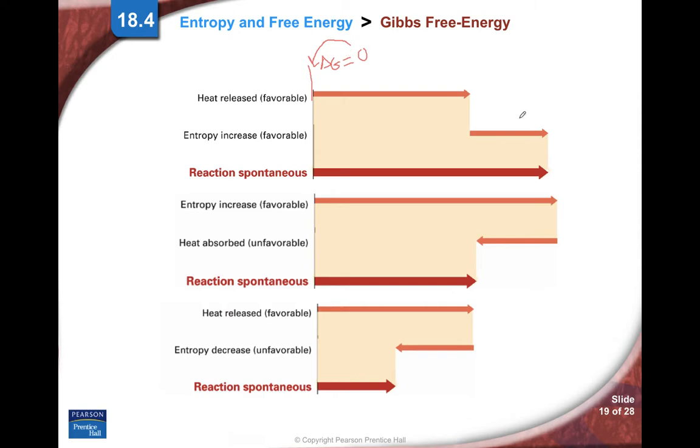This is the delta G for the first reaction, this is delta G for the second reaction, this is delta G for the third reaction. This line is the heat, so that's delta H. And this is delta S, see how it says entropy? Then finally this is delta H and this is delta S.